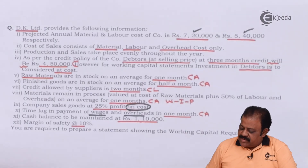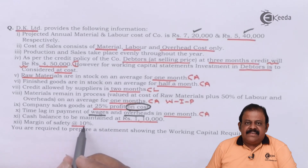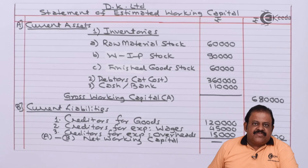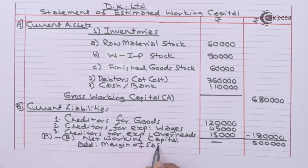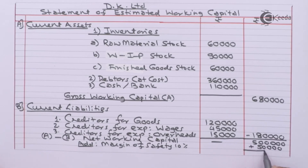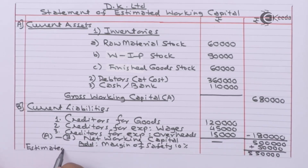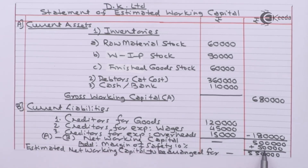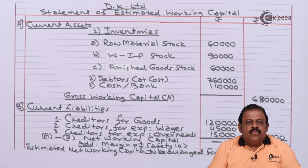In the question they have said margin of safety to be taken at ten percent. So this value of net working capital of five lakhs will have ten percent margin of safety added — that is fifty thousand. Five lakhs plus fifty thousand equals five lakh fifty thousand — this will be the estimated net working capital to be arranged. In this question we understood how to calculate missing information of overheads, which was the main point.